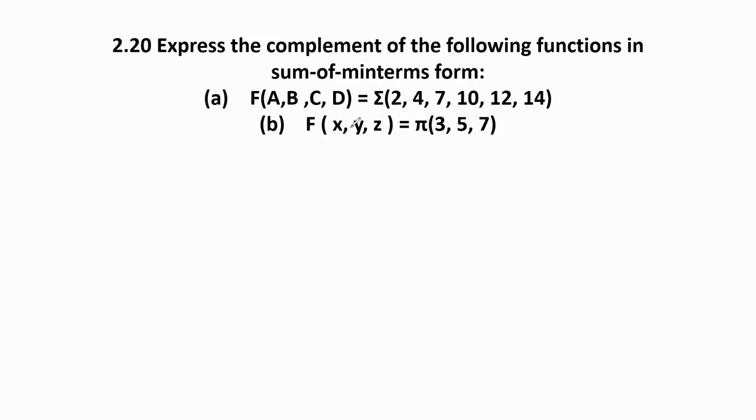Two Boolean functions are given. The first one: f(A,B,C,D) = Σ(2,4,7,10,12,14). Sigma means summation operator, so the given Boolean function is in SOP form - sum of products form. The numbers mentioned in the sigma operator are minterm numbers.